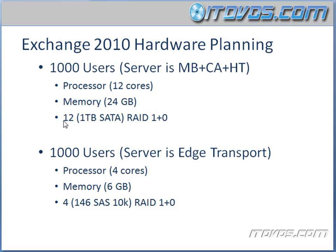Now let's talk about our disks. About 12 1TB SATA disks in a RAID 1+0 configuration should get the job done as far as I/O and storage capacity go. In a RAID 1+0 configuration, you're basically going to lose half of your disks to redundancy. So in this situation, we're going to lose six disks to redundancy. In theory, we'd have about six terabytes of usable space, but in reality you're actually going to have a little less than that.